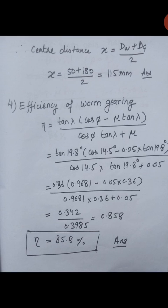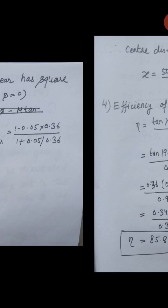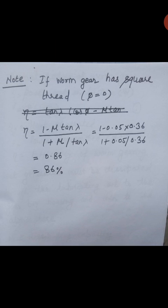One important thing to note: if in this problem it is given that the worm consists of square thread, then you have to take normal pressure angle φ equal to 0. In that case, efficiency is given by (1 minus μ·tan(λ)) upon (1 plus μ·tan(λ)). Putting the values of μ and λ, we get efficiency equal to 86%.